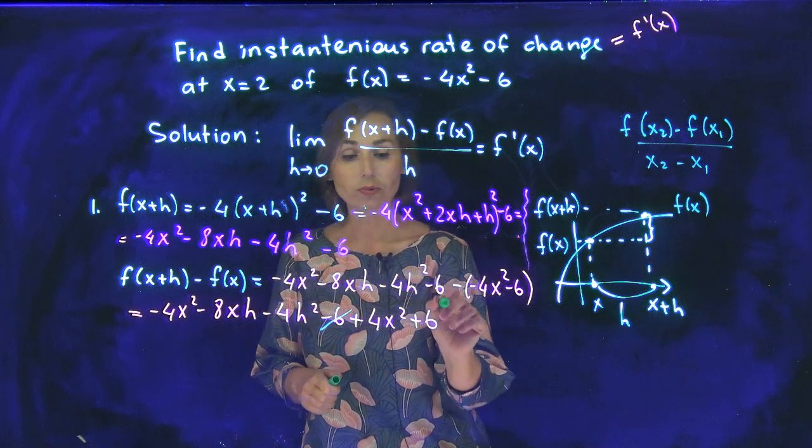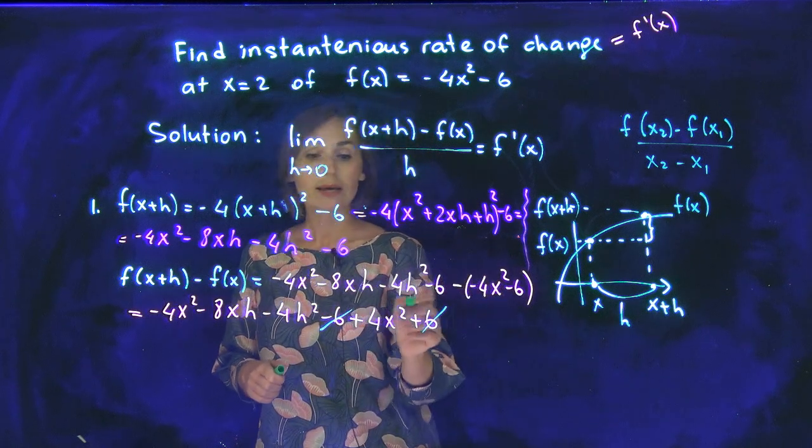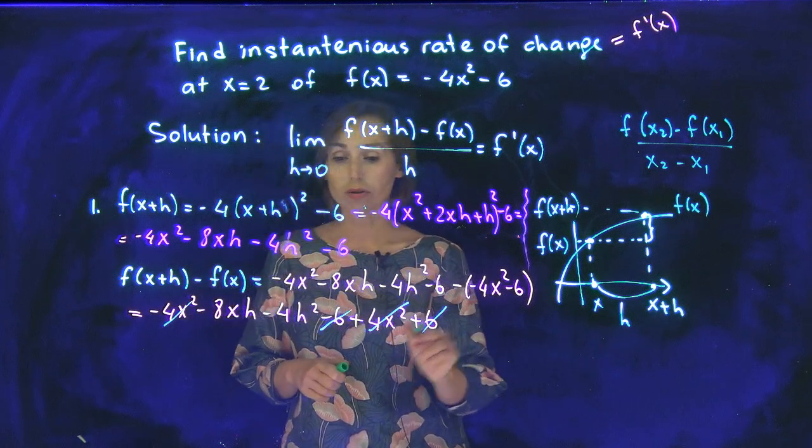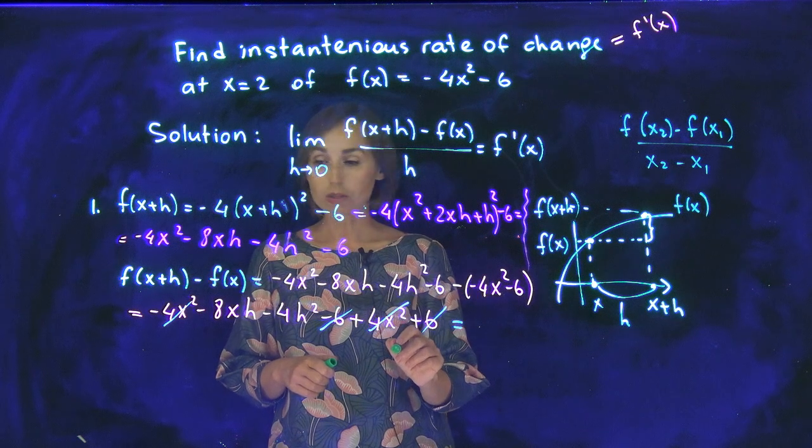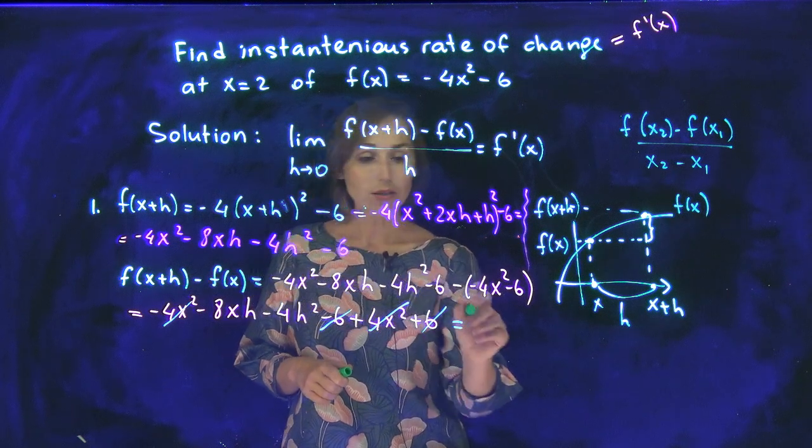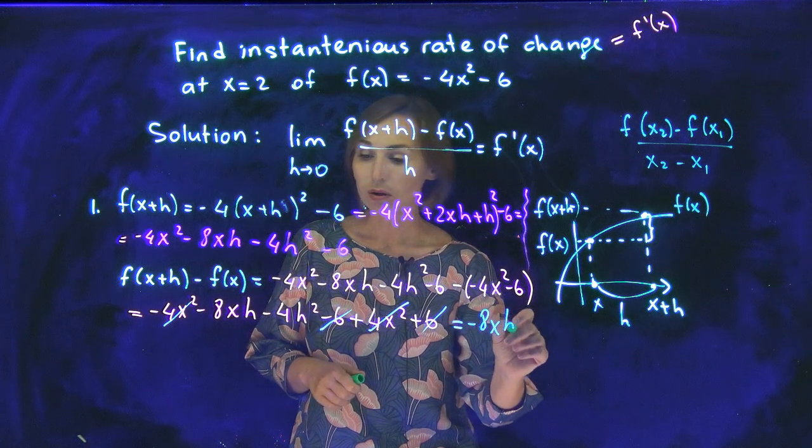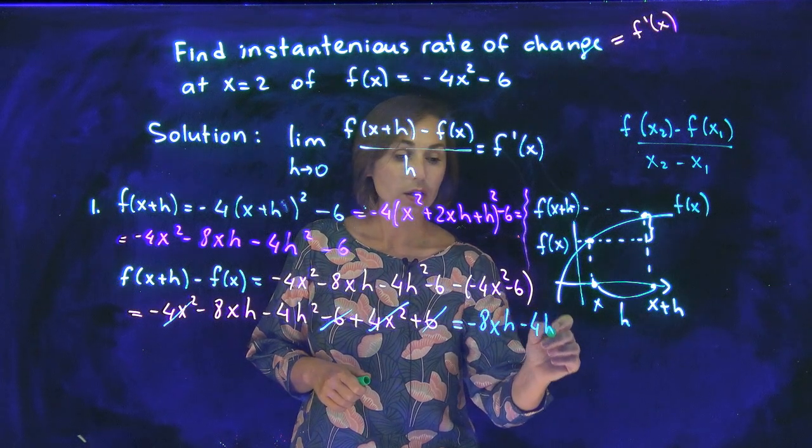Negative 6, positive 6, 0. Negative 4x squared, positive 4x squared, 0. So what is left from the whole expression? You have negative 8xh minus 4h squared.